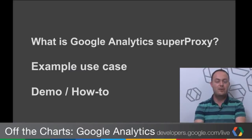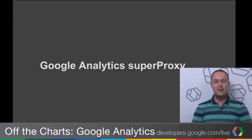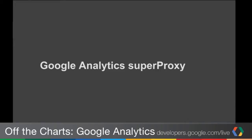We're going to talk about what it is, some example use cases, and then a demo on how to get started and do this yourself. So what is Google Analytics Super Proxy? If you're familiar with some of the other projects from the Developer Relations team here at Google Analytics, we've done stuff like the Google Analytics Easy Dashboard Library and the Report Automation, which some know as the Magic Script. The Super Proxy is another open source project that can be used as a tool to make your data public.